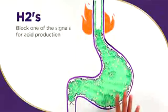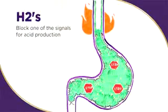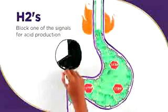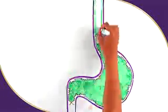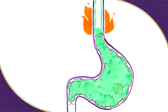H2 antagonists block one of three signals that tells your body to produce acid. They typically last eight to twelve hours, but if taken more than a few days in a row, they can become less effective.